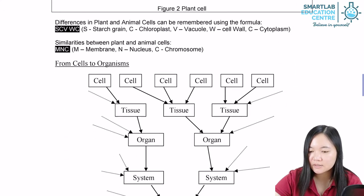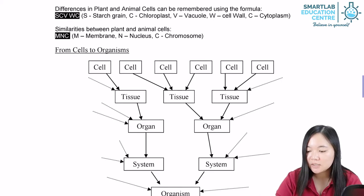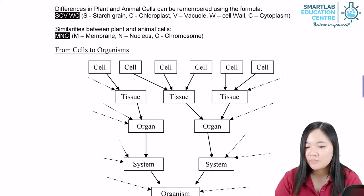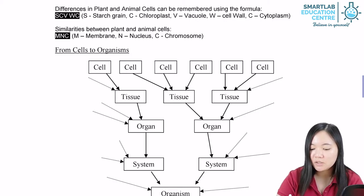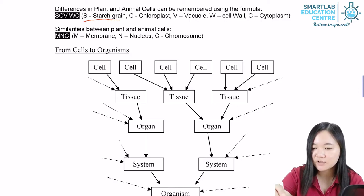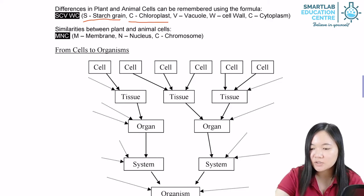Let's take a look at the summary here. Differences between plant and animal cells can be remembered with the following formula: S for starch grain, C for chloroplasts, V for vacuole, W for cell wall, and C for cytoplasm.